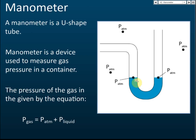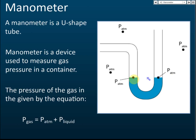The third thing to know is: for a given liquid, same level means same pressure. The pressure at two points on the same liquid at the same level is the same.